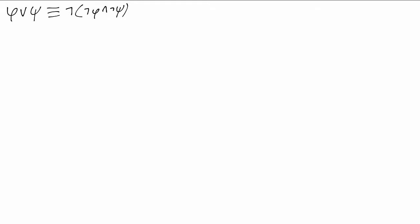This is the De Morgan duality between and and or. And exists x phi is equivalent to not for all x not phi, which is the De Morgan duality between for all and exists.